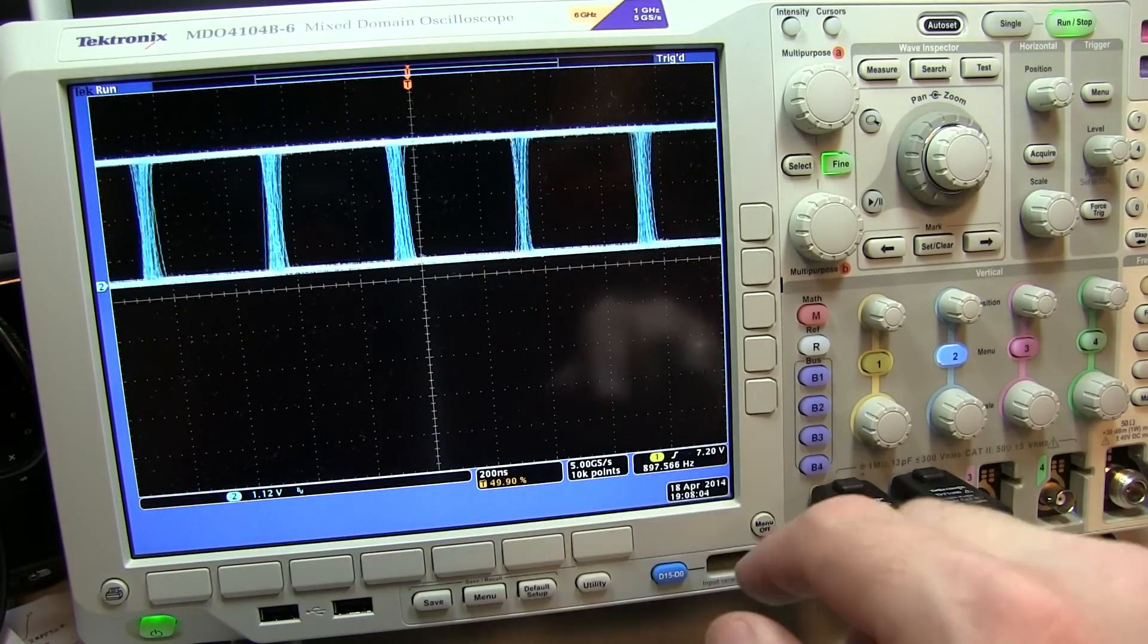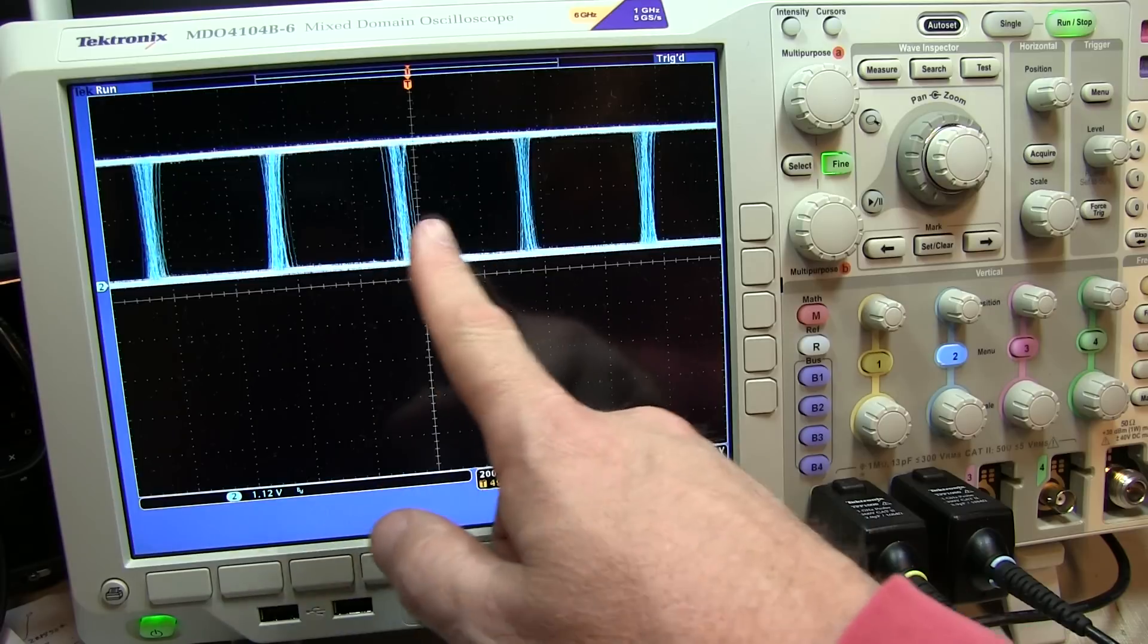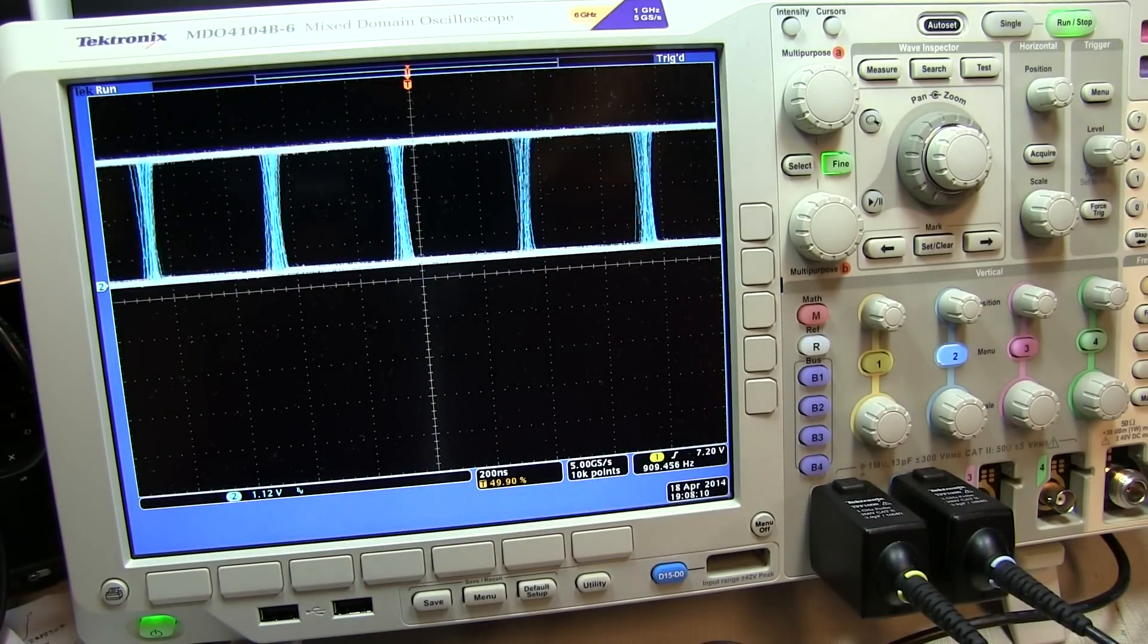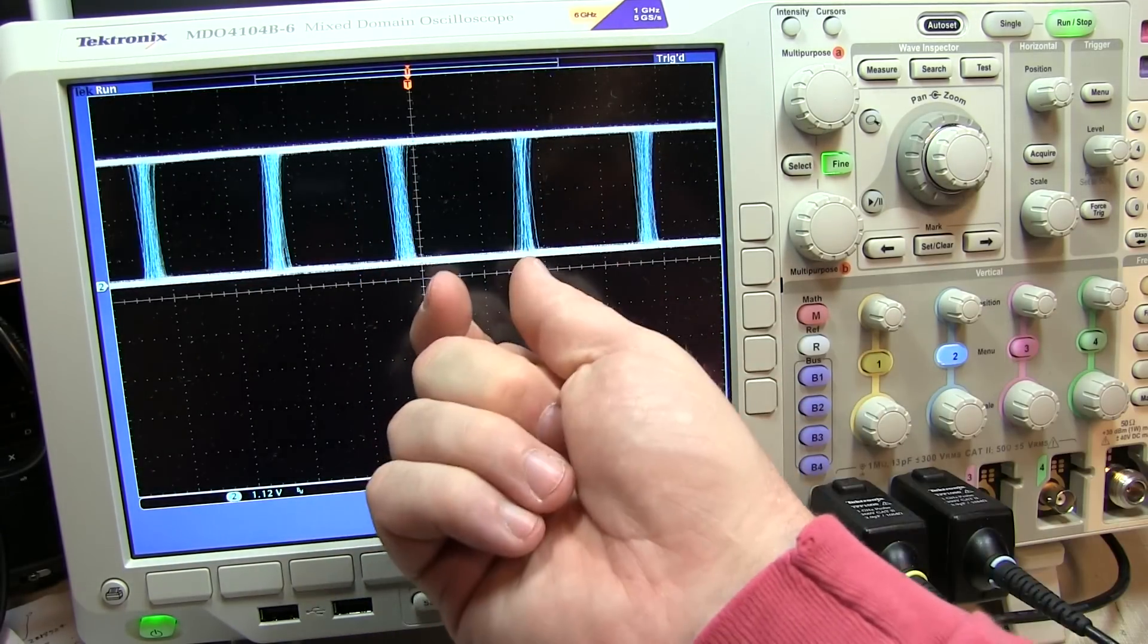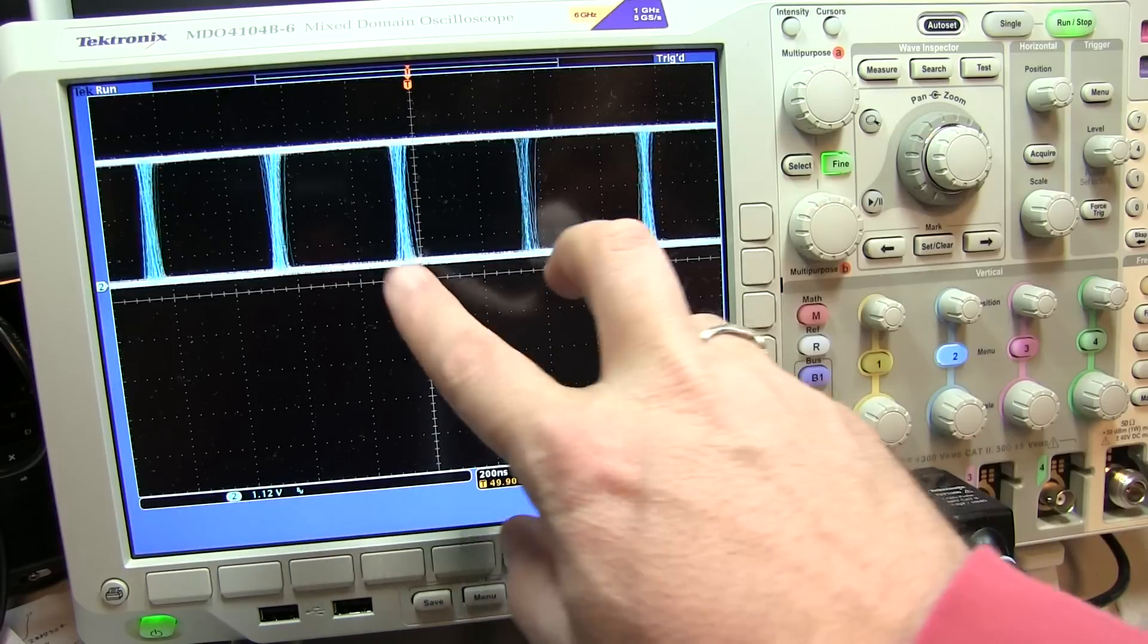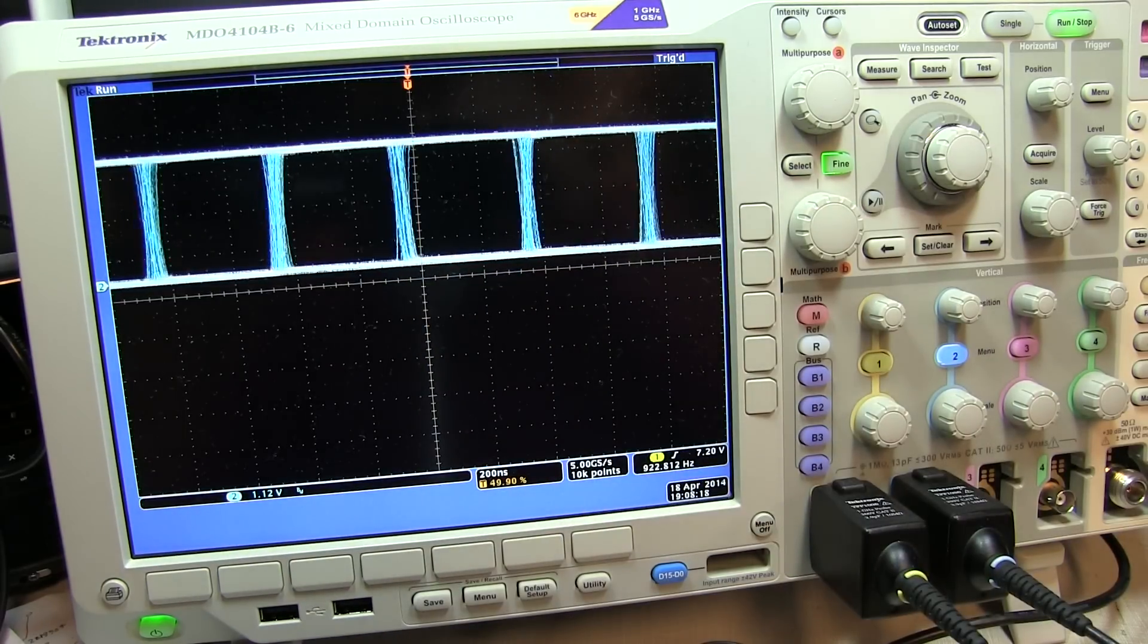So that's one figure of merit. The cleaner the eye pattern is, in terms of the rising and falling edges laying on top of each other, the easier it is to sample that data and put it into a latch in a circuit. So that's one figure of merit for an eye pattern.